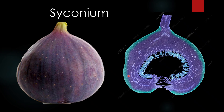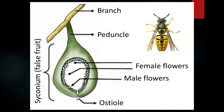The syconium is basically a receptacle which has a large number of very tiny flowers inside that are yet to be pollinated. The wasp will pollinate them, but the question is from where will the wasp enter. There is an entry point called the ostiole — the female wasp enters inside through this ostiole, pollinates the female flowers, and then lays the eggs. So when NCERT says the wasp lays eggs in the fruit, it is referring to this syconium.